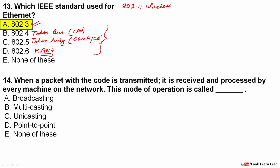When a packet is transmitted and received and processed by every machine on the network, what type of communication is this? If all machines receive it, it is broadcasting. When more than one but not all receive it, it is multicasting. When only one receives it, it is unicasting. Point-to-point is communication between exactly two devices. Since all machines receive the packet here, the answer is broadcasting.